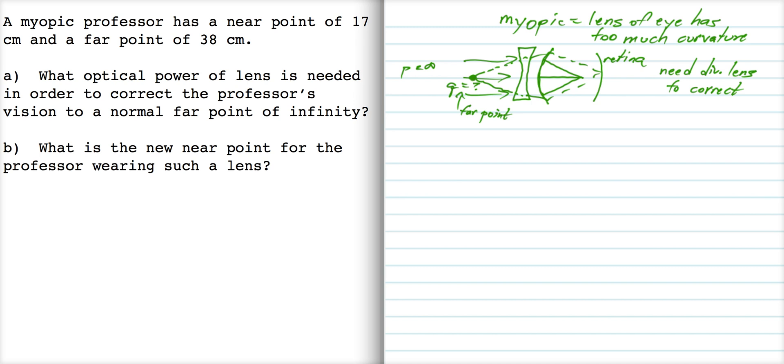So, if we want to correct the far point, we're told that for an object that's at infinity, so the object's at infinity, we want the image to be 38 centimeters in front of the lens. So minus 38 centimeters, right? That's our convention: if an image is in front of the lens, we say that it's got a negative image distance.